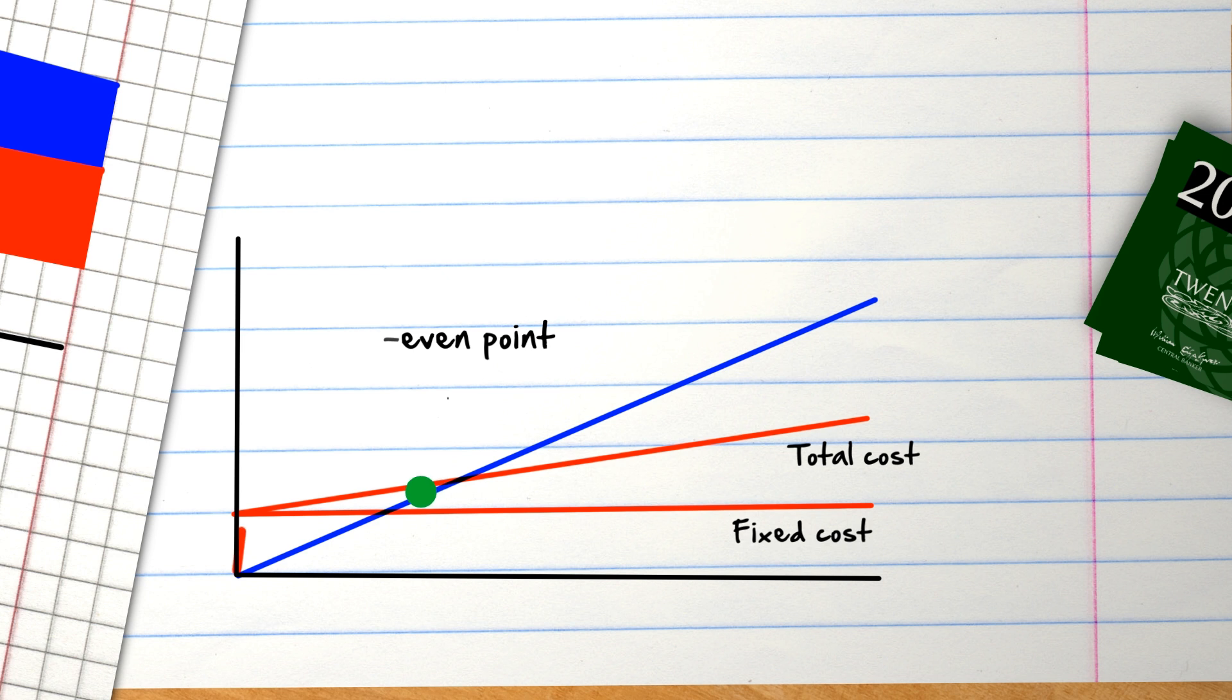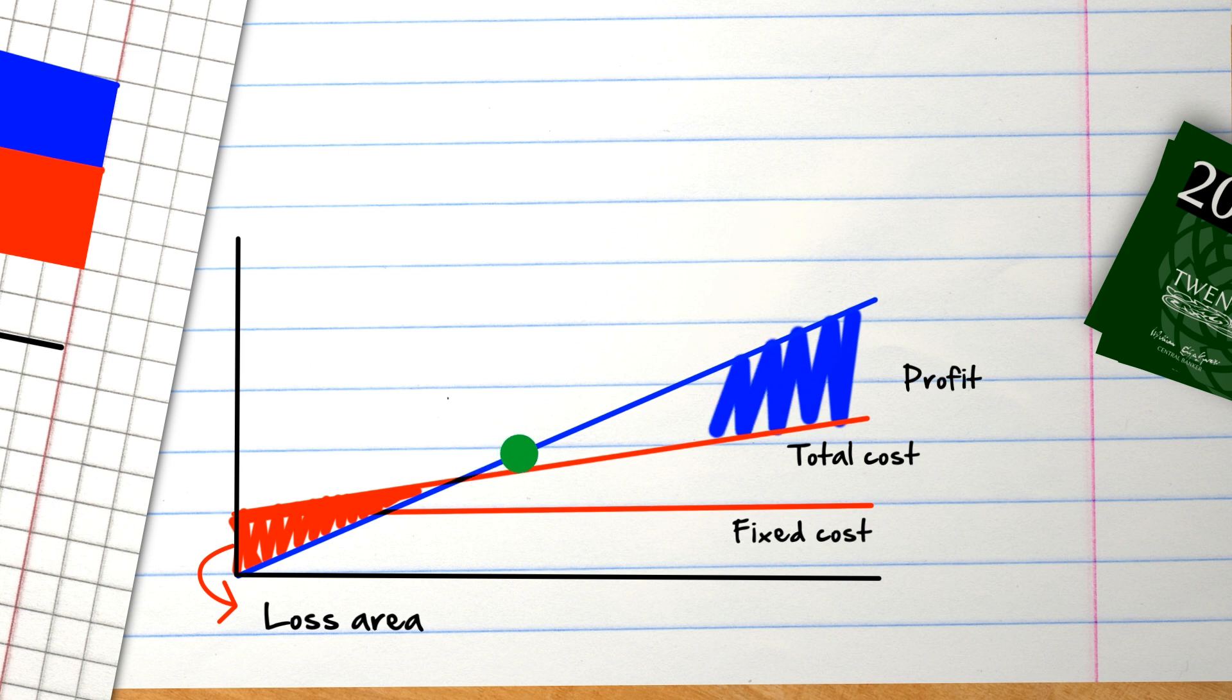When you're not selling enough lemonades and not earning enough to pay for these short-term things, your business is said to be losing money. When you're selling more than enough lemonades to earn more than enough money to pay for these short-term things, this extra earnings is called profit.